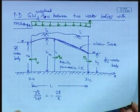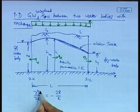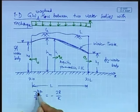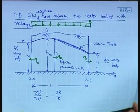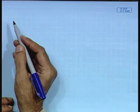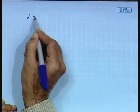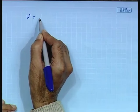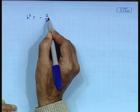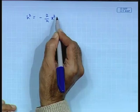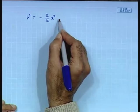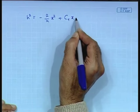The governing equation is actually d²(h²)/dx² = -2R/K. If we integrate this governing equation twice, we get h² = -(R/K)x² + C₁x + C₂, where C₁ and C₂ are the constants of integration.